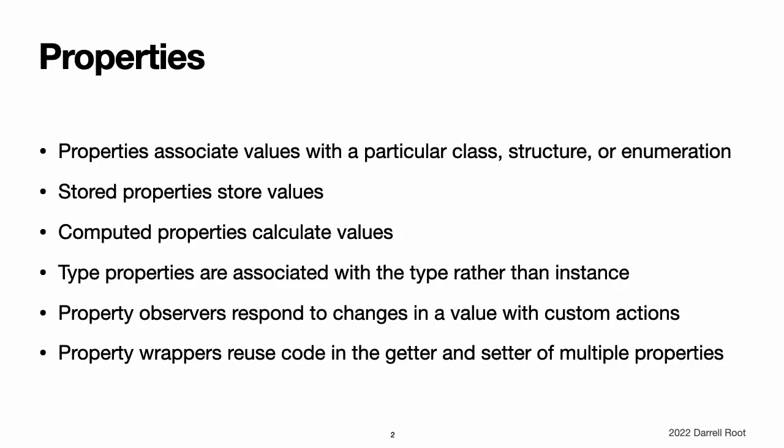Properties associate values with a particular class, structure, or enumeration. Stored properties store constant and variable values as part of an instance, whereas computed properties calculate rather than store a value. Computed properties are provided by classes, structures, and enumerations. Stored properties are provided only by classes and structures.